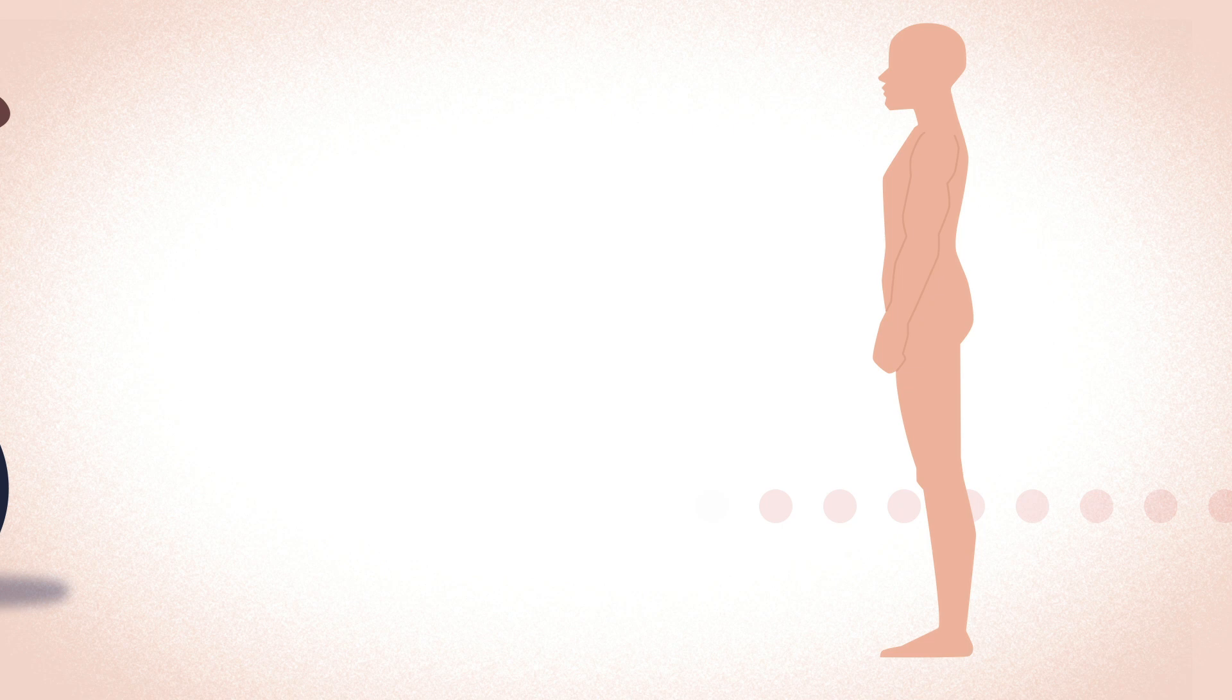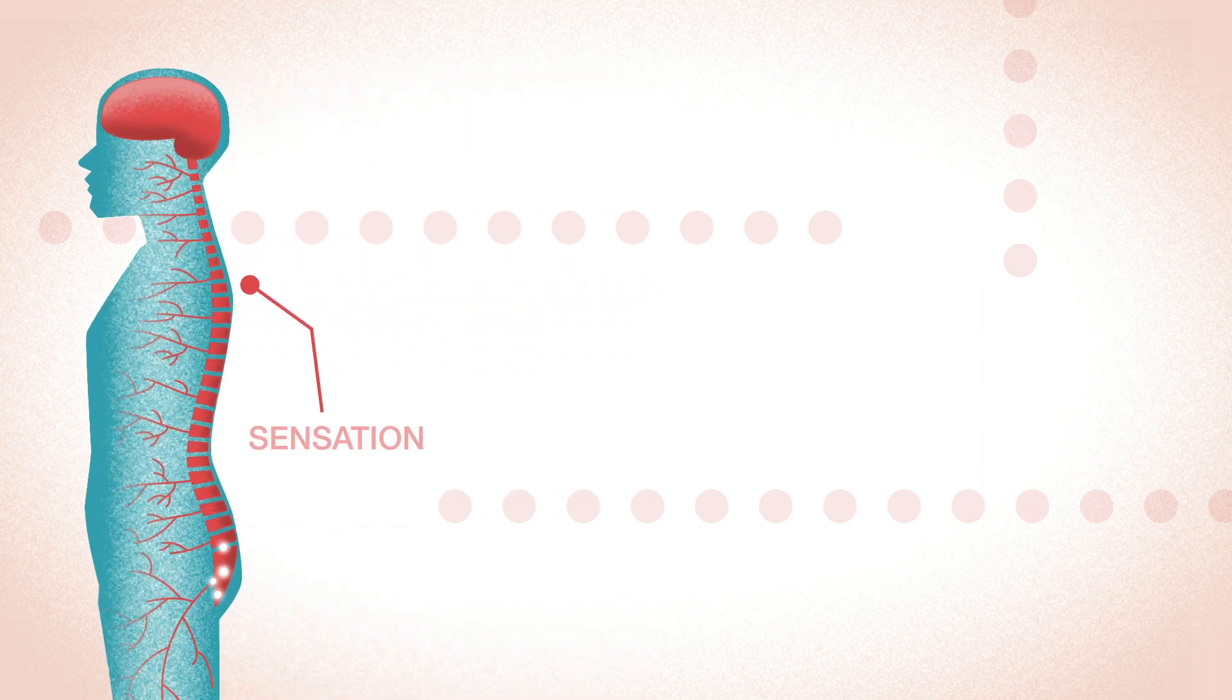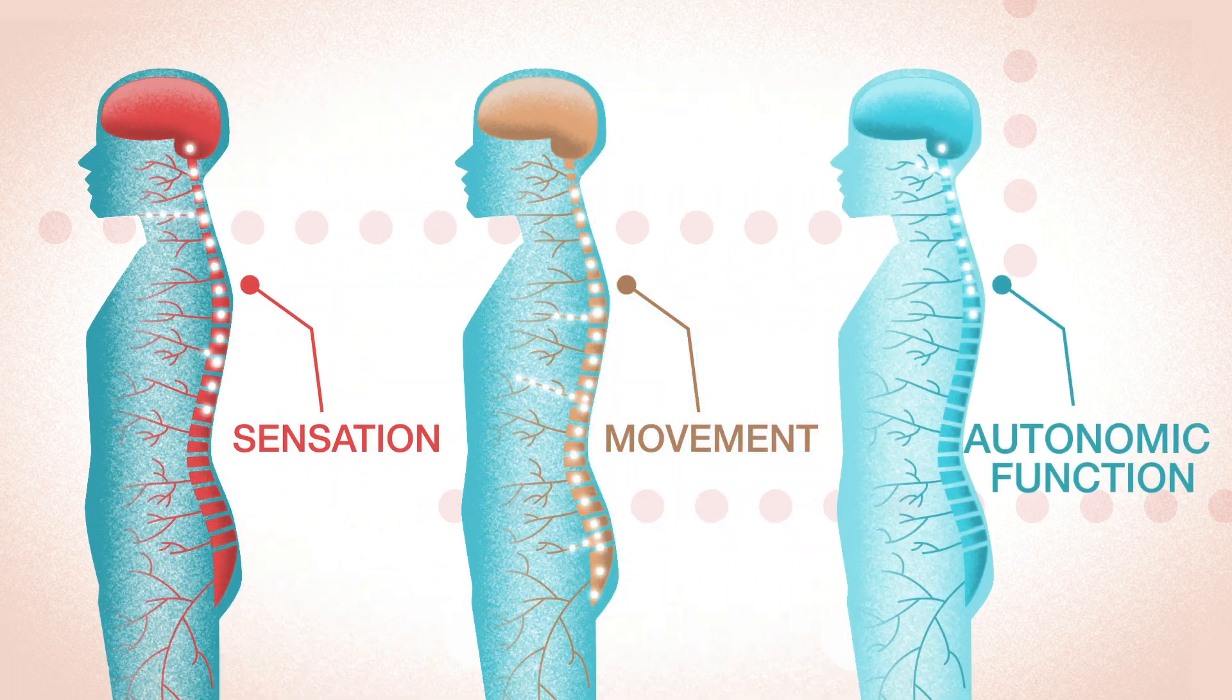In a healthy person, the spinal cord receives and sends signals to and from the brain regarding sensation, movements, and autonomic functions.